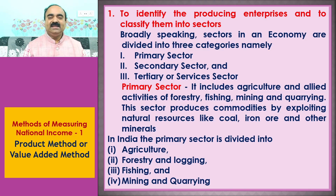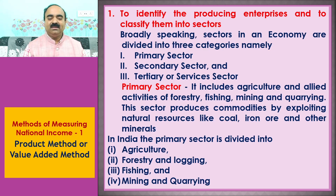The primary sector produces commodities by exploiting natural resources like coal, iron ore, and other minerals. In India, the primary sector is divided into: 1. Agriculture, 2. Forestry and logging, 3. Fishing, and 4. Mining and quarrying.